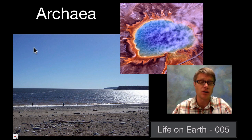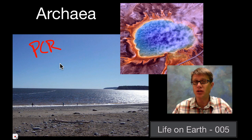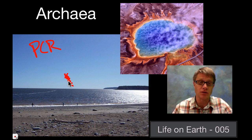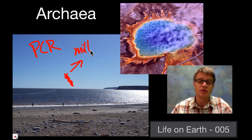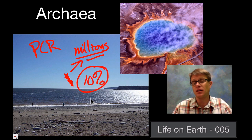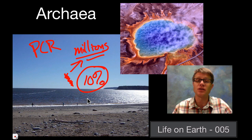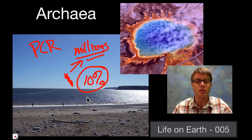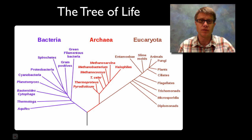Once we started looking out in the ocean, we used a method called PCR — polymerase chain reaction. It's basically a way to take a little bit of genetic material, a little stretch of DNA, and make millions and millions of copies of it so we could actually study it. What we found is that almost 10% of all the life we were finding in the ocean are archaebacteria. So archaebacteria are everywhere — they're found in the gut of a cow, the gut of you. We just didn't really know what we were looking for.